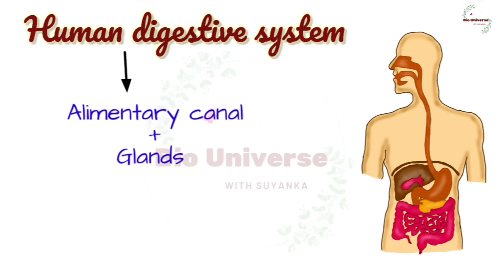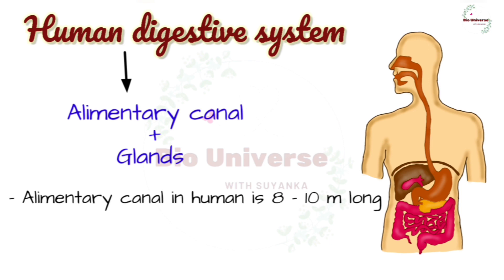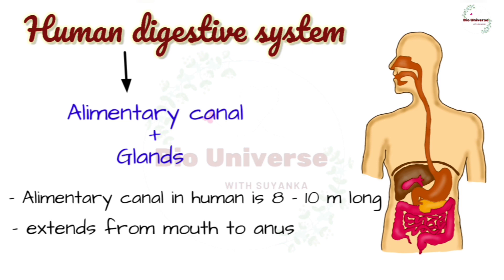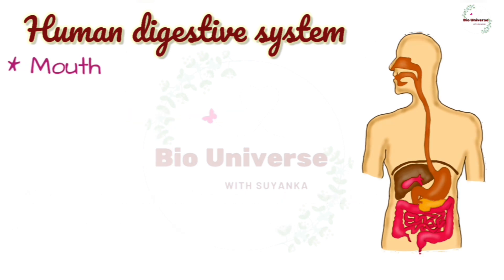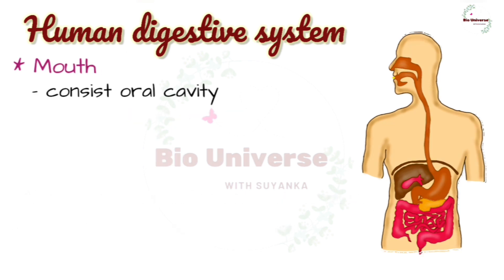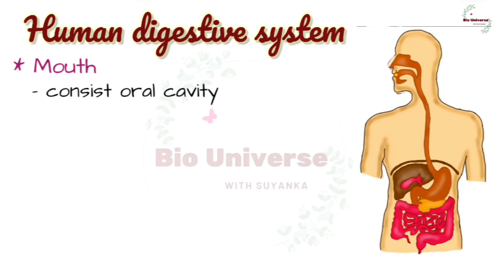Now let's discuss the human digestive system. The alimentary canal and the glands associated with digestion constitute the human digestive system. The alimentary canal in human beings measures about 8 to 10 meters in length and extends from the mouth to the anus.